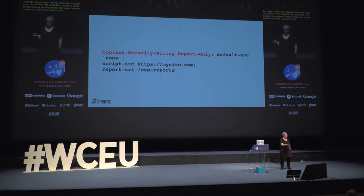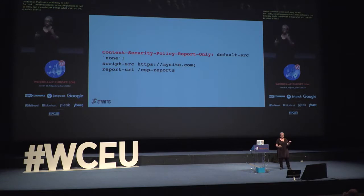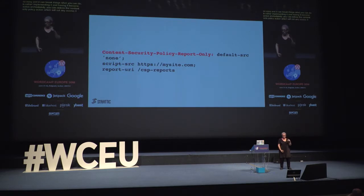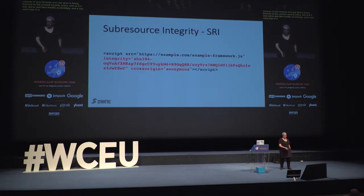Creating content security policies is not so easy, and it can break things. What you can do is rather than implementing a content security policy and having it become active immediately, you can use the report-only function. This will not deliver the content security policy and activate it for your users, but you can look in the developer console of your browser and see what is being blocked as if the CSP was active, then modify accordingly. It can also send logs to a URL you specify in JSON format.